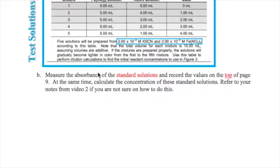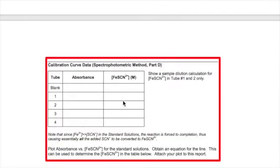Now take the standard and blank solutions to a spectrophotometer and after blanking or zeroing the spectrophotometer, measure the absorbance of all the standard solutions. Record those in the absorbance column in the table titled calibration curve data on top of page 9.